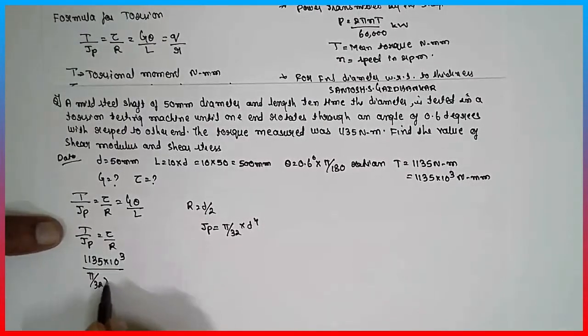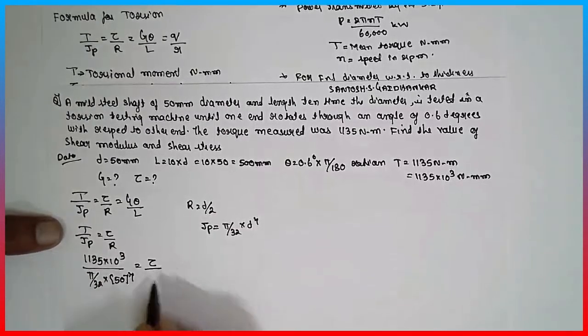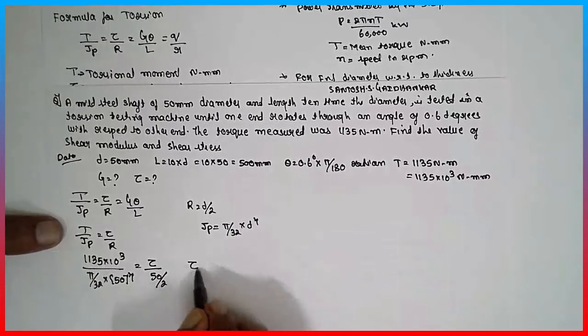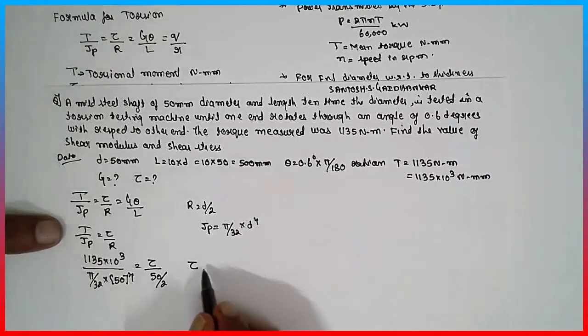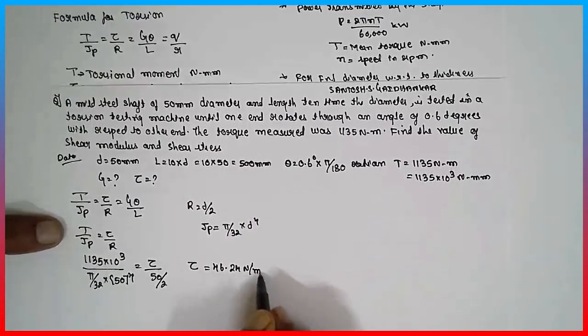Pi by 32 into diameter 50 raised to 4 is equal to tau divided by 50 divided by 2. Cross multiply, the tau value will be 46.24 Newton per mm square.